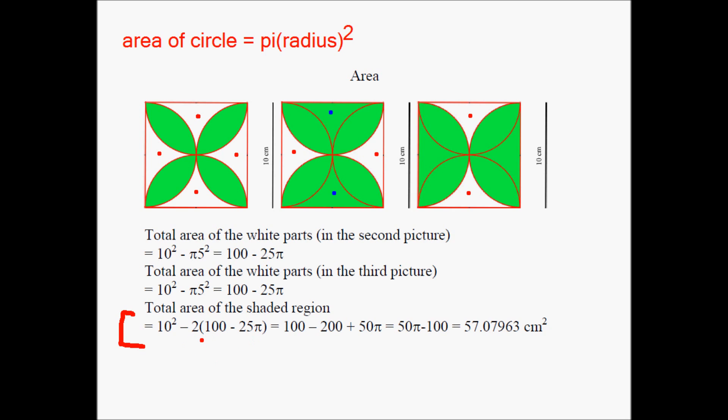Now, if you do your math right, you can simplify this expression as follows: 10 squared is 100, 2 times 100 is 200, and 2 times 25 pi is negative 2 times negative 25 pi is going to be positive 50 pi. And if you subtract 200 from 100, you're going to get negative 100, and you're going to get 50 pi. This could be your answer, but if you want your answer in decimal, the approximate answer is 57.07963. That's the area of the 4 green leaves.